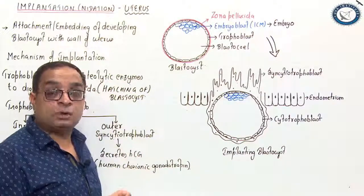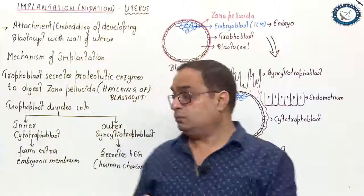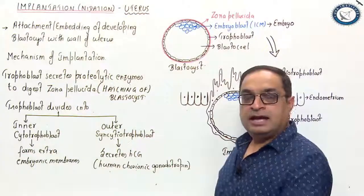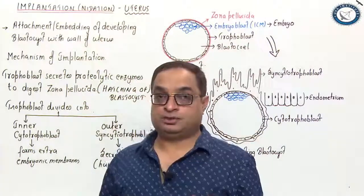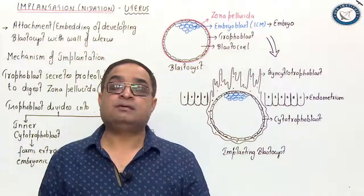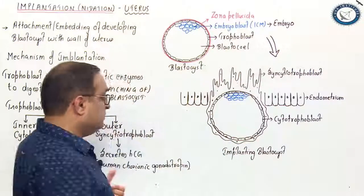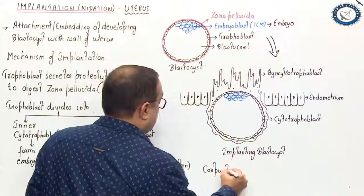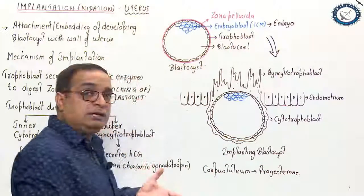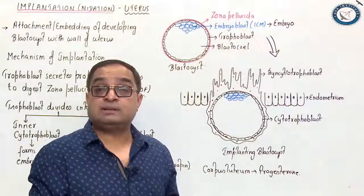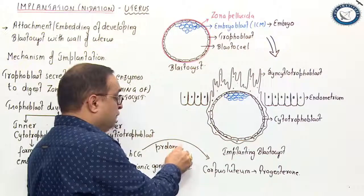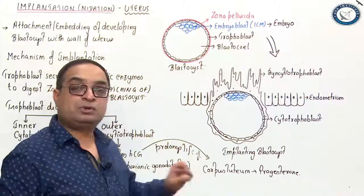Syncytiotrophoblast also secretes a glycoproteinaceous hormone: HCG, which stands for human chorionic gonadotropin. When this structure is implanting and attaching with the wall, HCG prolongs the life of the corpus luteum. When ovulation occurs, the Graafian follicle ruptures and the remaining cells form a temporary endocrine gland called corpus luteum. Corpus luteum secretes progesterone, which is a very important pregnancy-maintaining hormone. HCG provides luteal support so that corpus luteum continues producing progesterone.